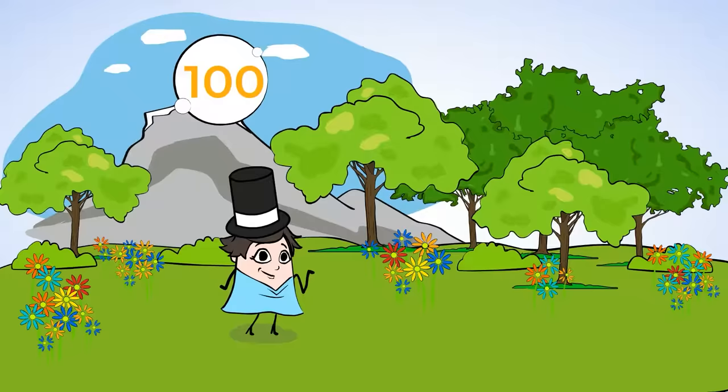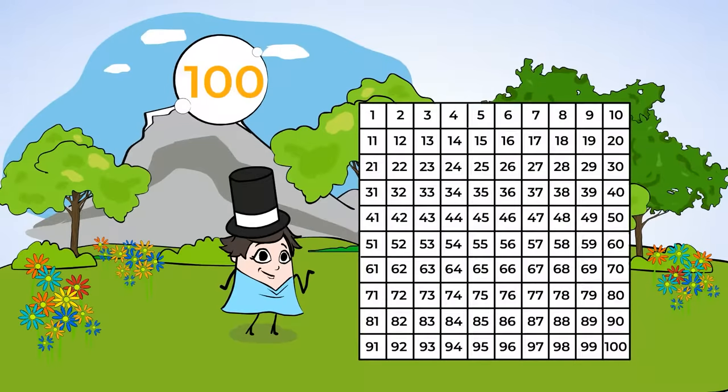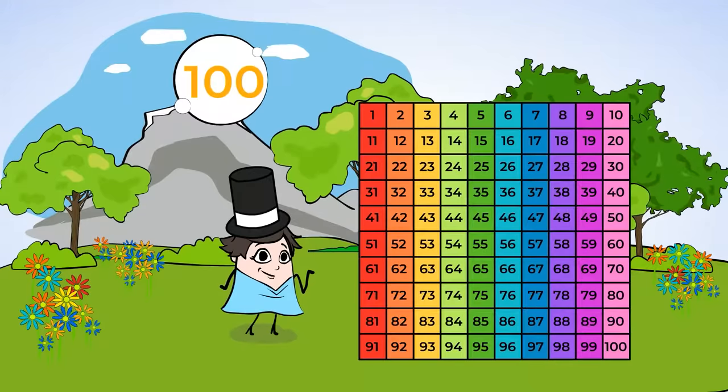Here is our Mighty Hundreds Chart. A hundreds chart starts at 1 and goes all the way up to 100. The numbers are all in order and follow a pattern. Wow, 100, that's a lot of numbers. But together, we can count them all.